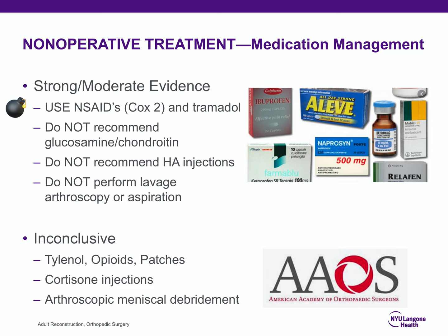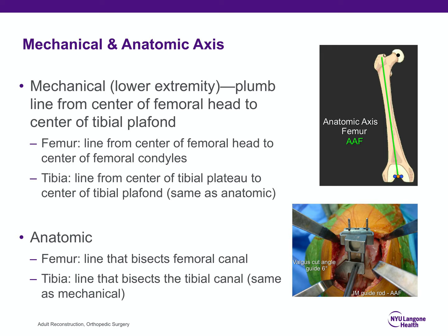For knee alignment and radiographic evaluation, we define mechanical and anatomic axes. The mechanical axis of the lower extremity is a plumb line from the center of the femoral head to the center of the tibial plafond. For the femur specifically, it runs from the femoral head center to the femoral condyle center. The tibial mechanical and anatomic axes are the same — a line bisecting the tibial canal. The femoral anatomic axis bisects the femoral canal.